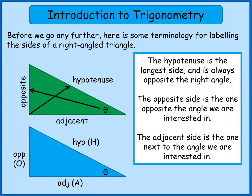What you might sometimes see is these words not written out in full but shortened. Opposite can be shortened to 'op' or just 'O', hypotenuse to 'hyp' or just 'H', and adjacent to 'adj' or just 'A'.